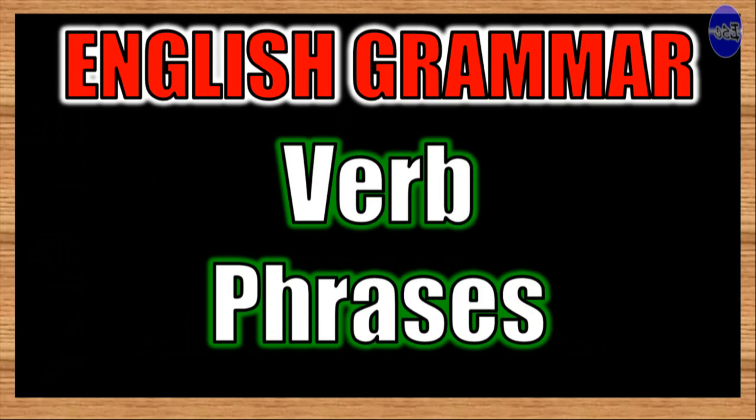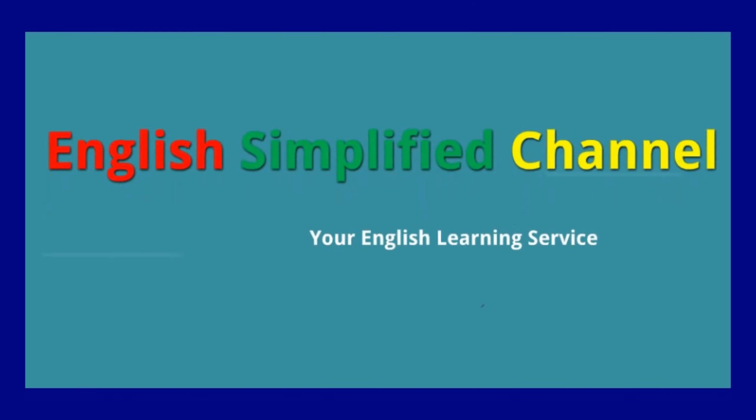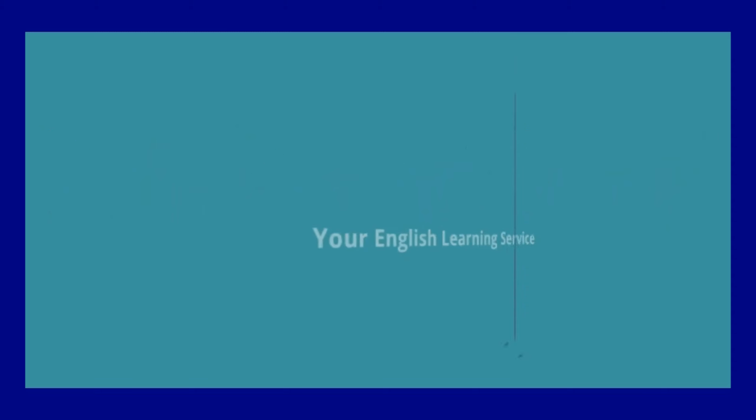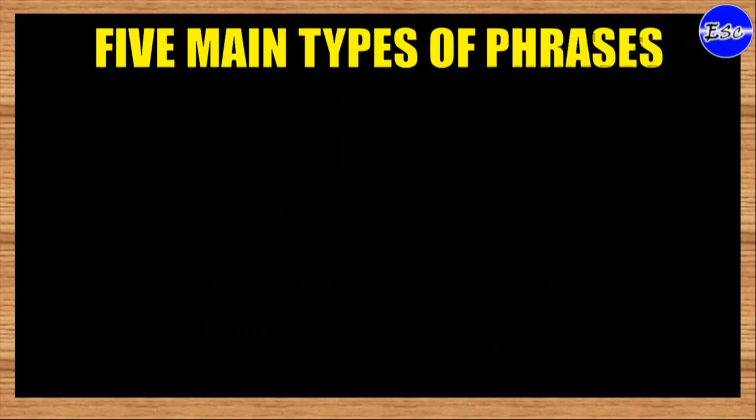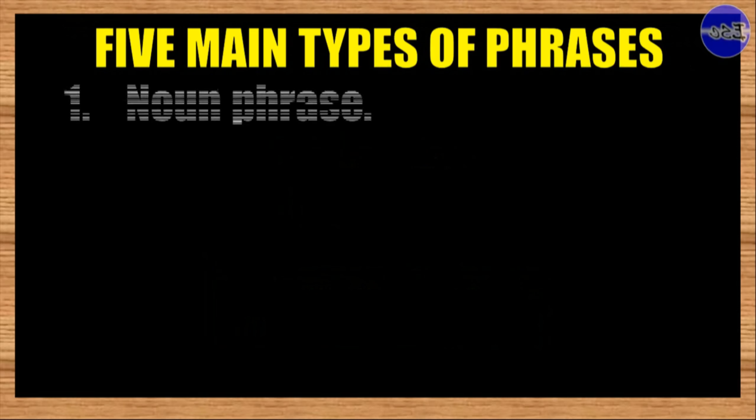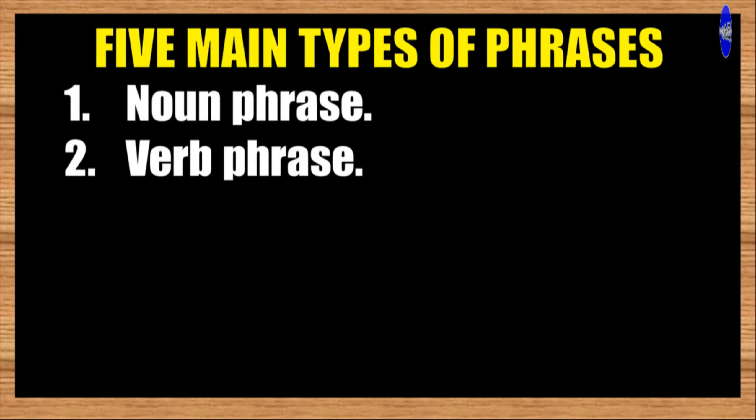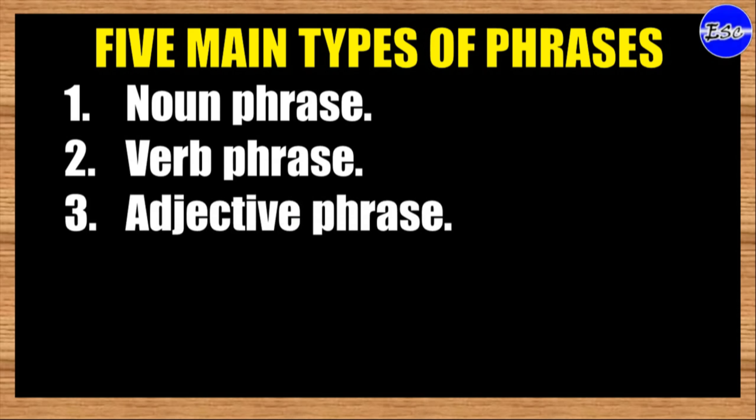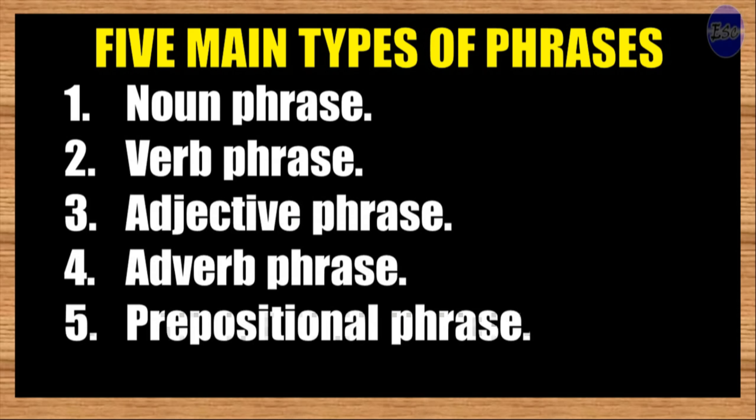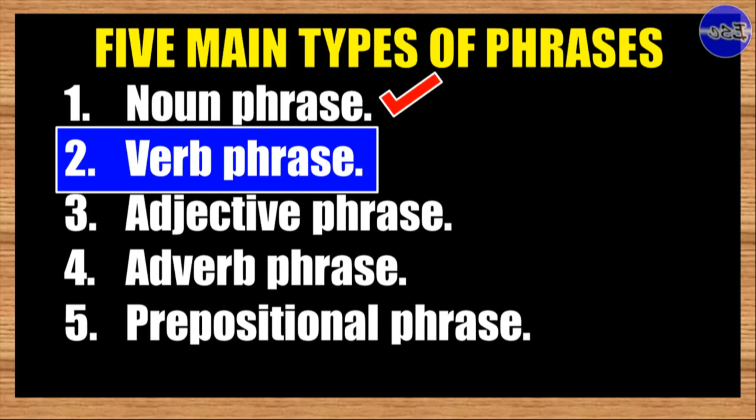English Grammar Verb Phrase. In English Grammar, there are five main types of phrases, and they are Noun Phrase, Verb Phrase, Adjective Phrase, Adverb Phrase, and Prepositional Phrase. In the previous video tutorial, we had already discussed the noun phrase, so now we focus on the verb phrase.